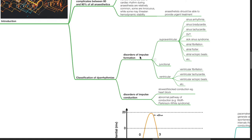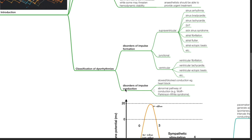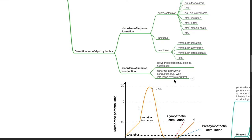Other disorders of impulse formation include junctional rhythms and ventricular arrhythmias including ventricular fibrillation, ventricular tachycardia, and ventricular ectopic beats. Examples of disorders of impulse conduction include slow or blocked conduction such as during heart block and abnormal pathway of conduction such as in Wolff-Parkinson-White syndrome.